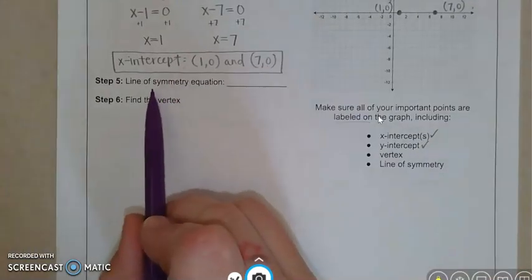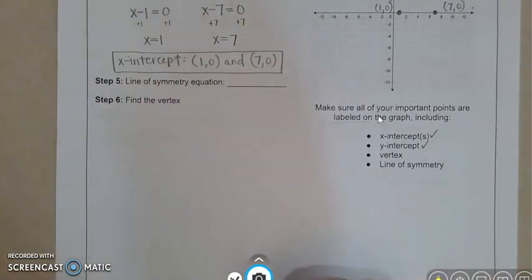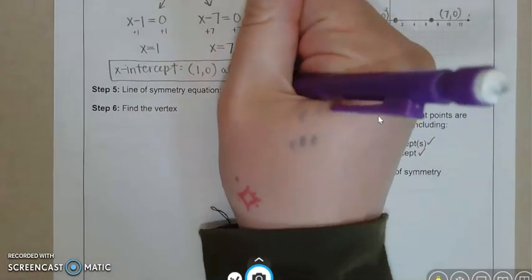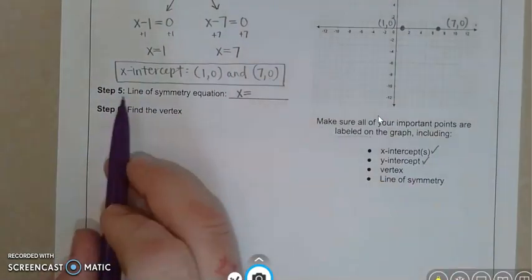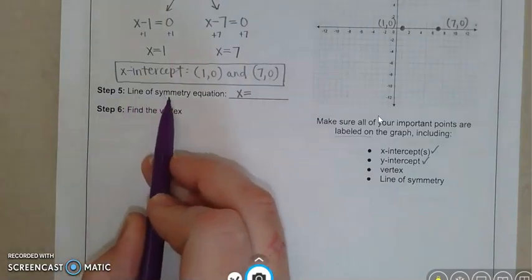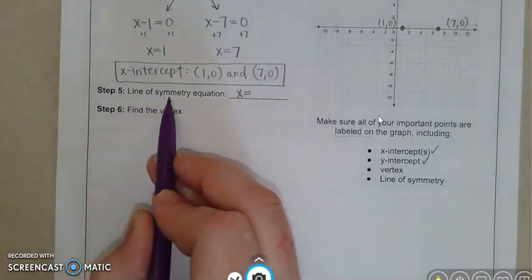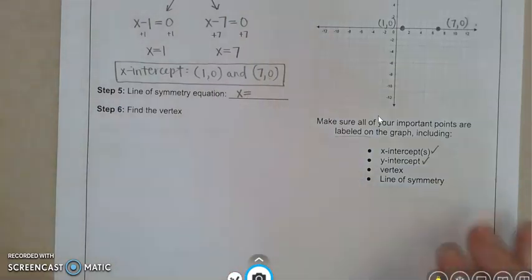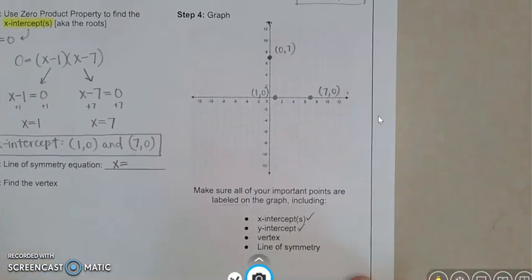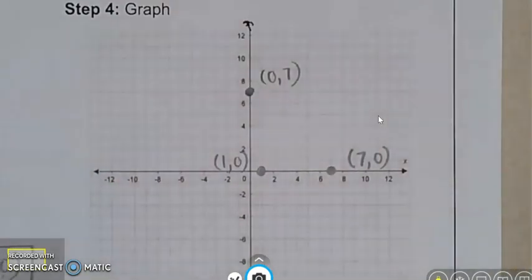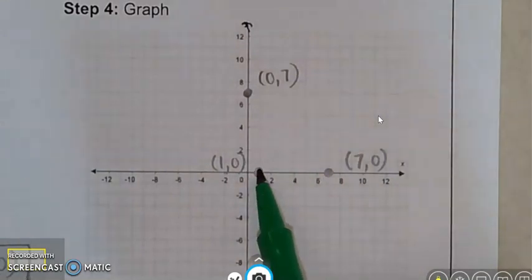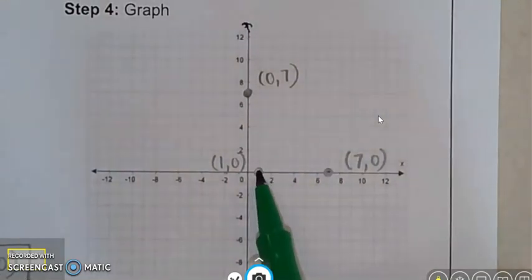So that is step number five, the line of symmetry equation. Now the equation is going to be x equals and then something. And the line of symmetry is the line that goes right down the middle of these two x-intercepts. So we're going to look, maybe I'll zoom in. Look here. These are our three points.